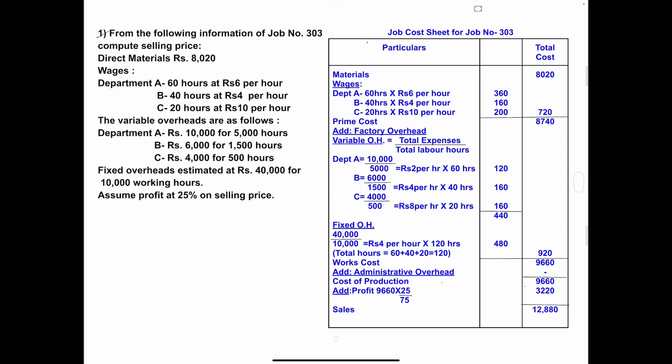Problem number 1. From the following information of job number 303, compute the selling price. Direct material: 8020. Wages — Department A: 60 hours at rupees 6 per hour; B: 40 hours at rupees 4 per hour; C: 20 hours at rupees 10 per hour.